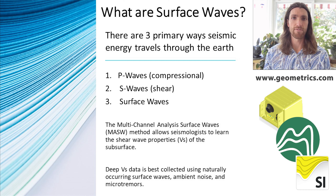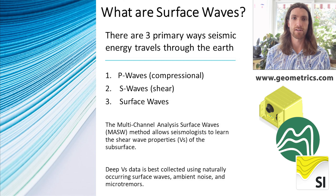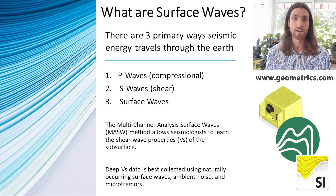For deep VS data, we're concerned about collecting naturally occurring microtremors because that's the best source of the low-frequency, long-period, long-wavelength information we need to collect data at depth. Artificial sources of low-frequency energy are often impractical for deep VS studies. You could set off explosives, as the USGS sometimes does, but the Atom seismograph is able to collect deep VS data completely non-invasively, non-destructively, and passively.